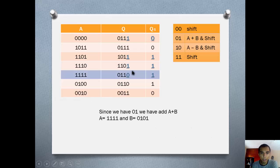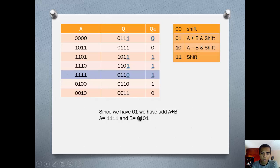We check it again and we got Q0=0 and Q-1=1, which means A plus B and shift. So we are going to add the accumulator and M: 1, 1, 1, 1 plus 0, 1, 0, 1. We put the sum in this row, and then in the next row we shift. We copy this bit 0 and start shifting: 0, 1, 0, 0, 0, 1, 1, 0.